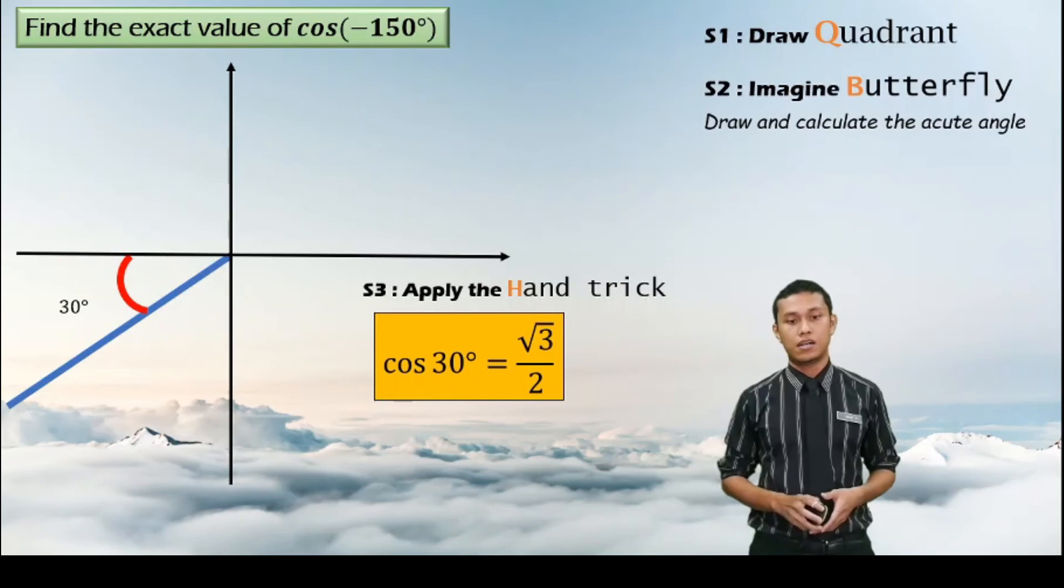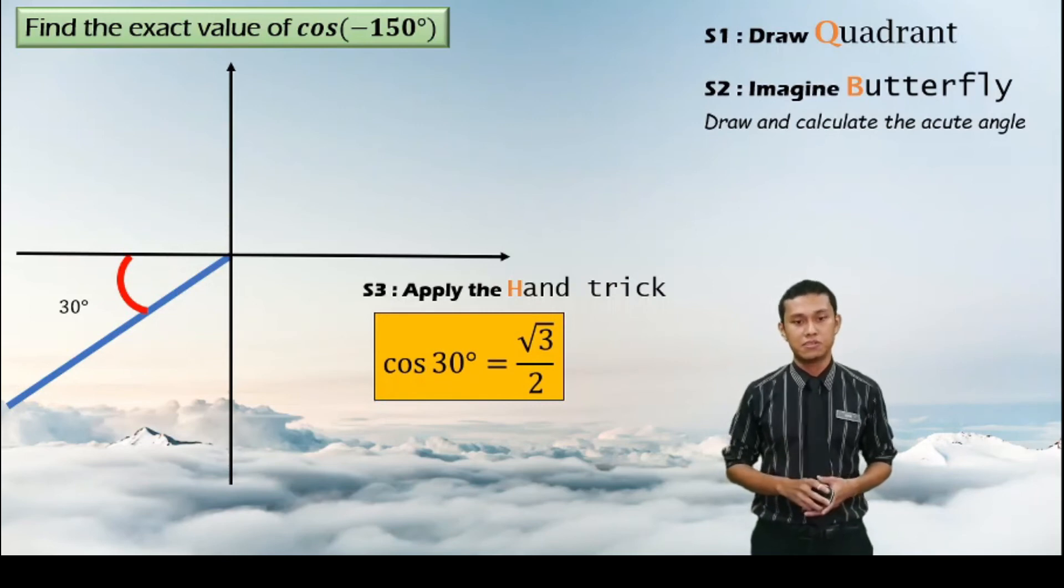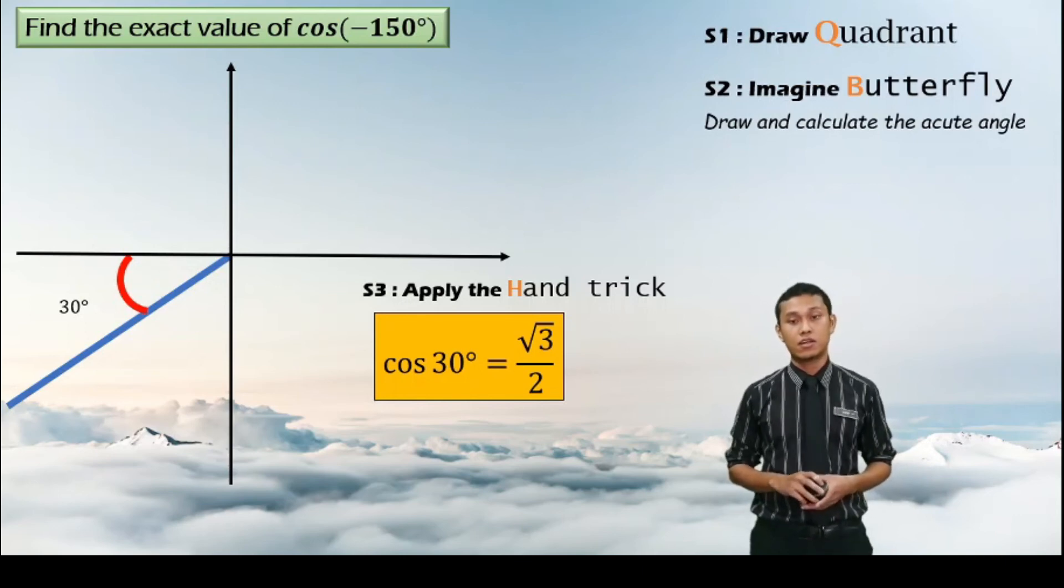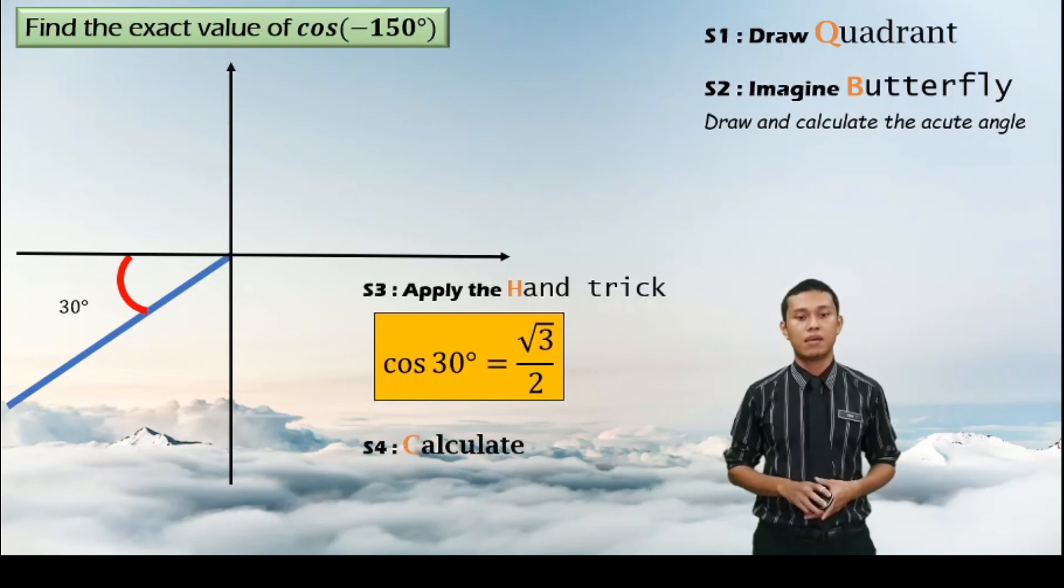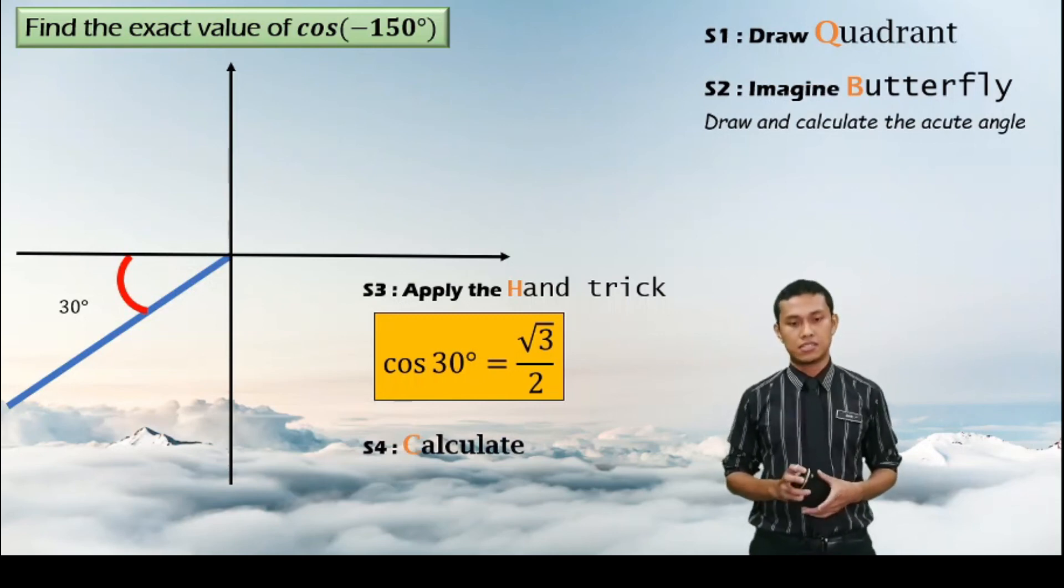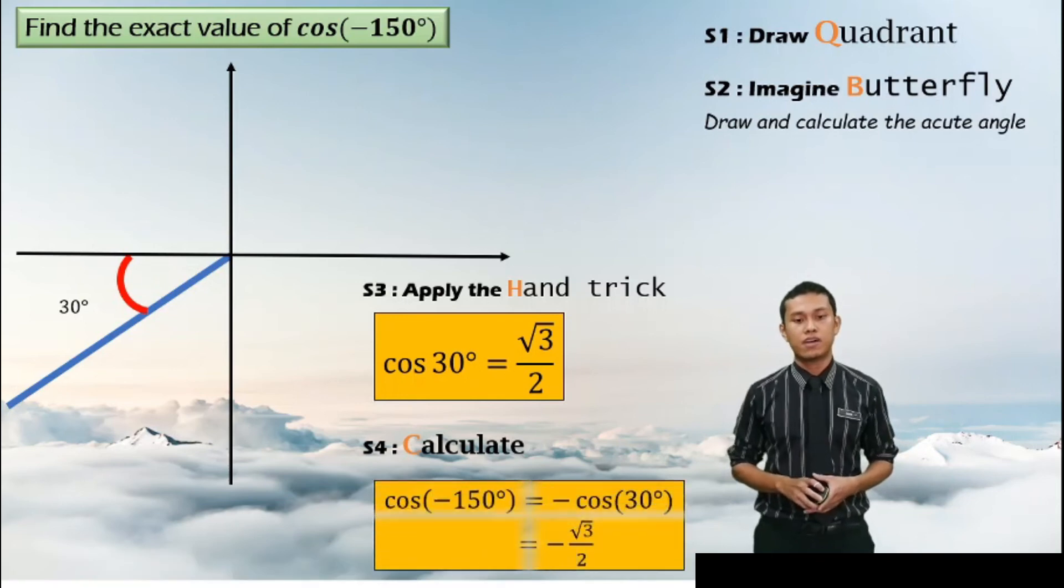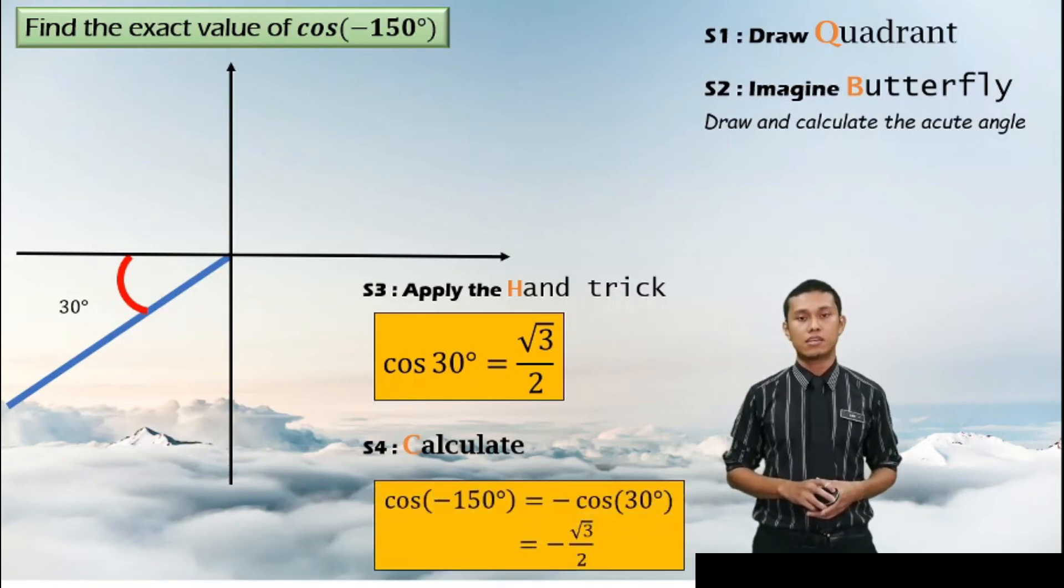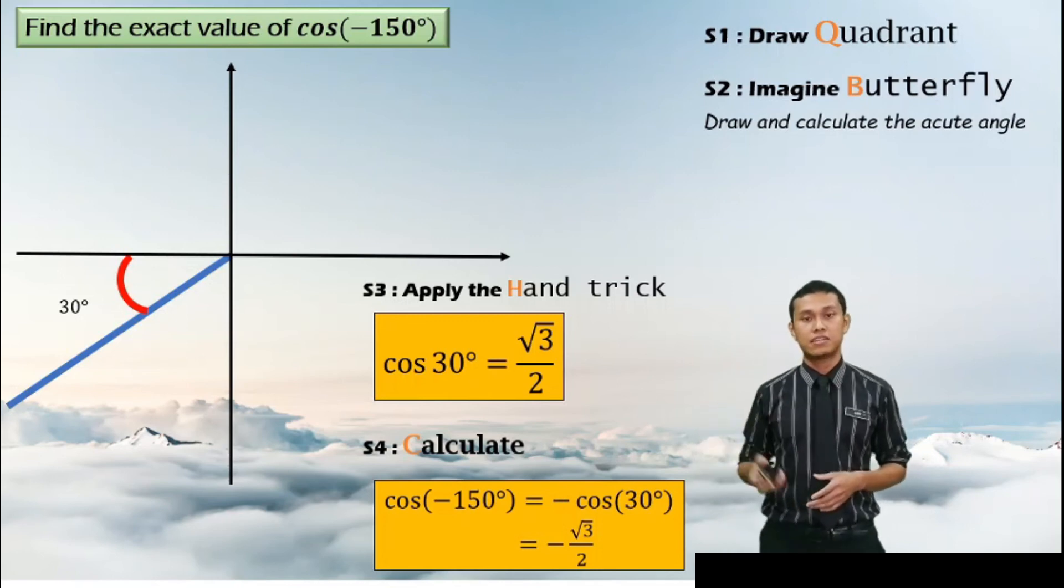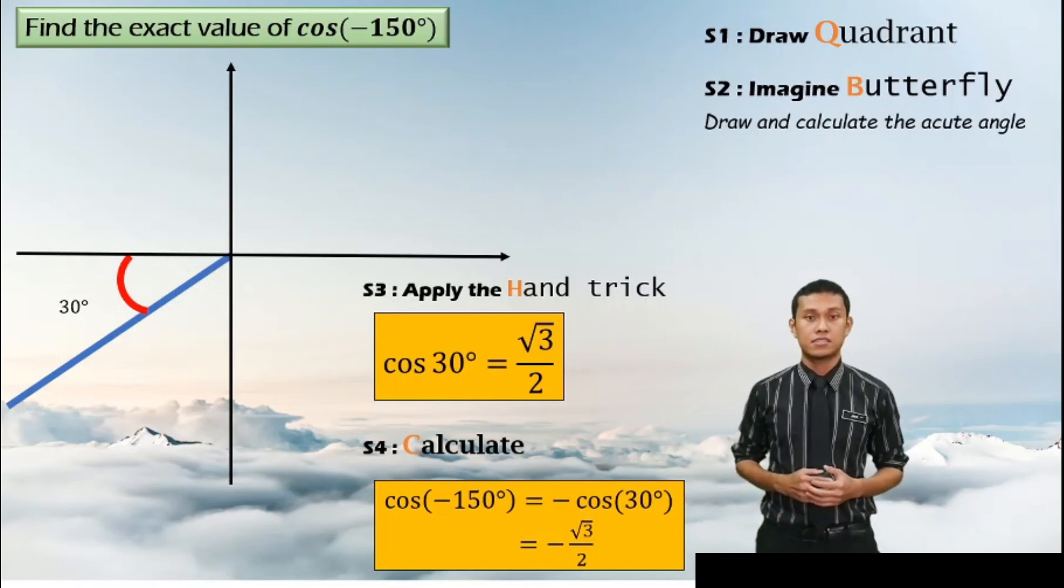Next, after applying the hand trick rule, you get the value equal to square root 3 over 2. So this is not the final answer yet. So the last step, which is step number 4, is to calculate the question. The question asks to find the value for cos negative 150 degree. So we have calculated using hand trick rule. So we get the answer is equal to negative square root 3 over 2.